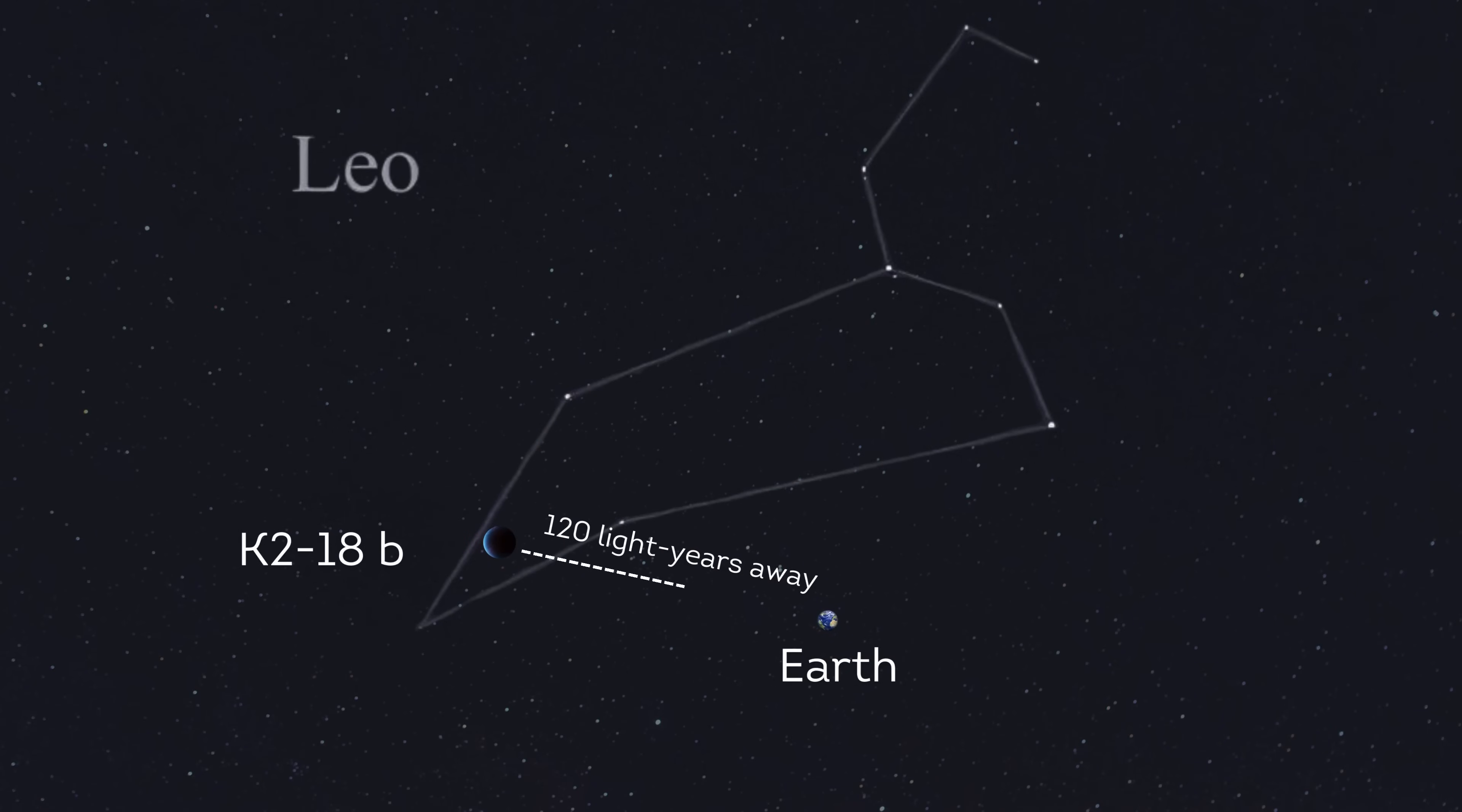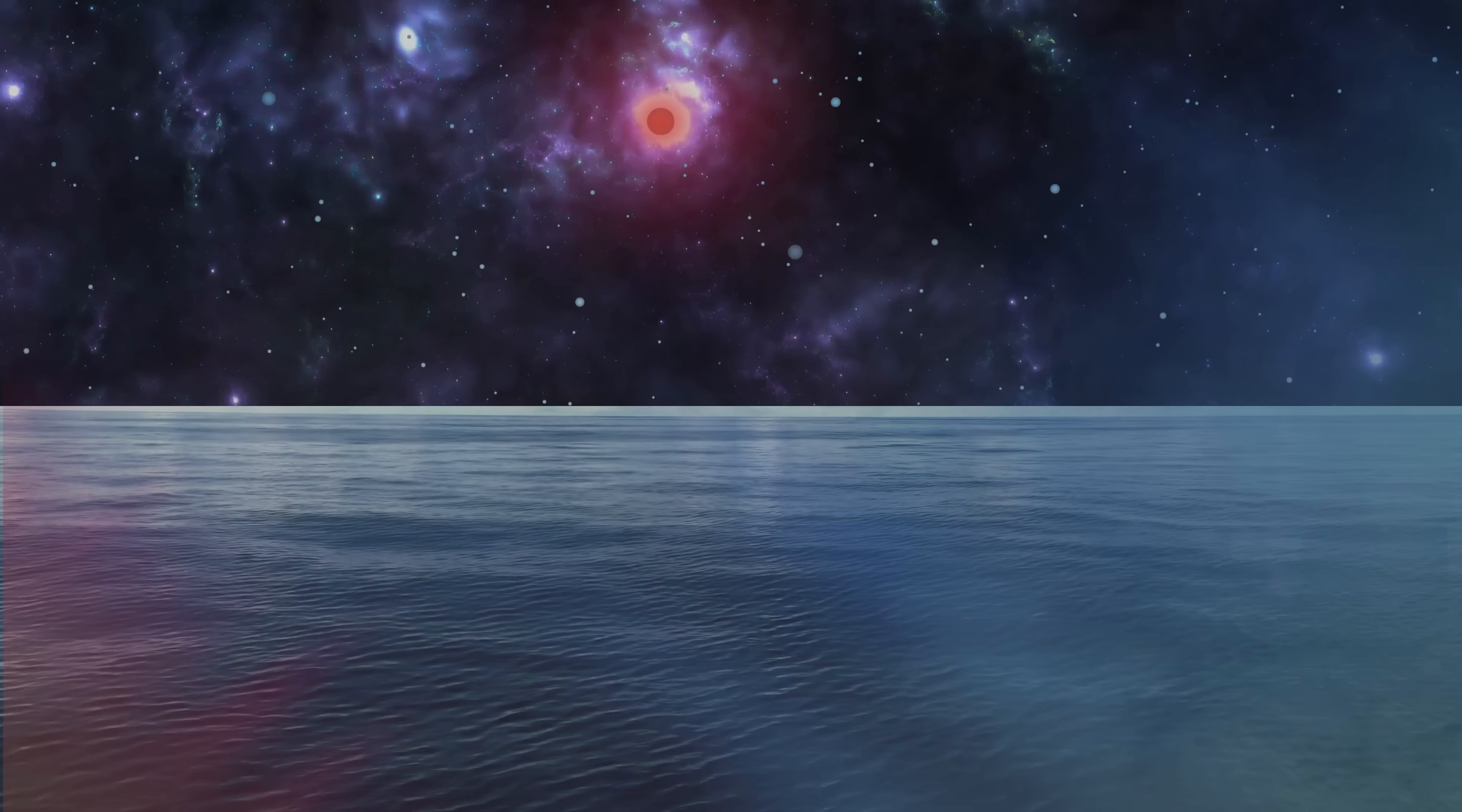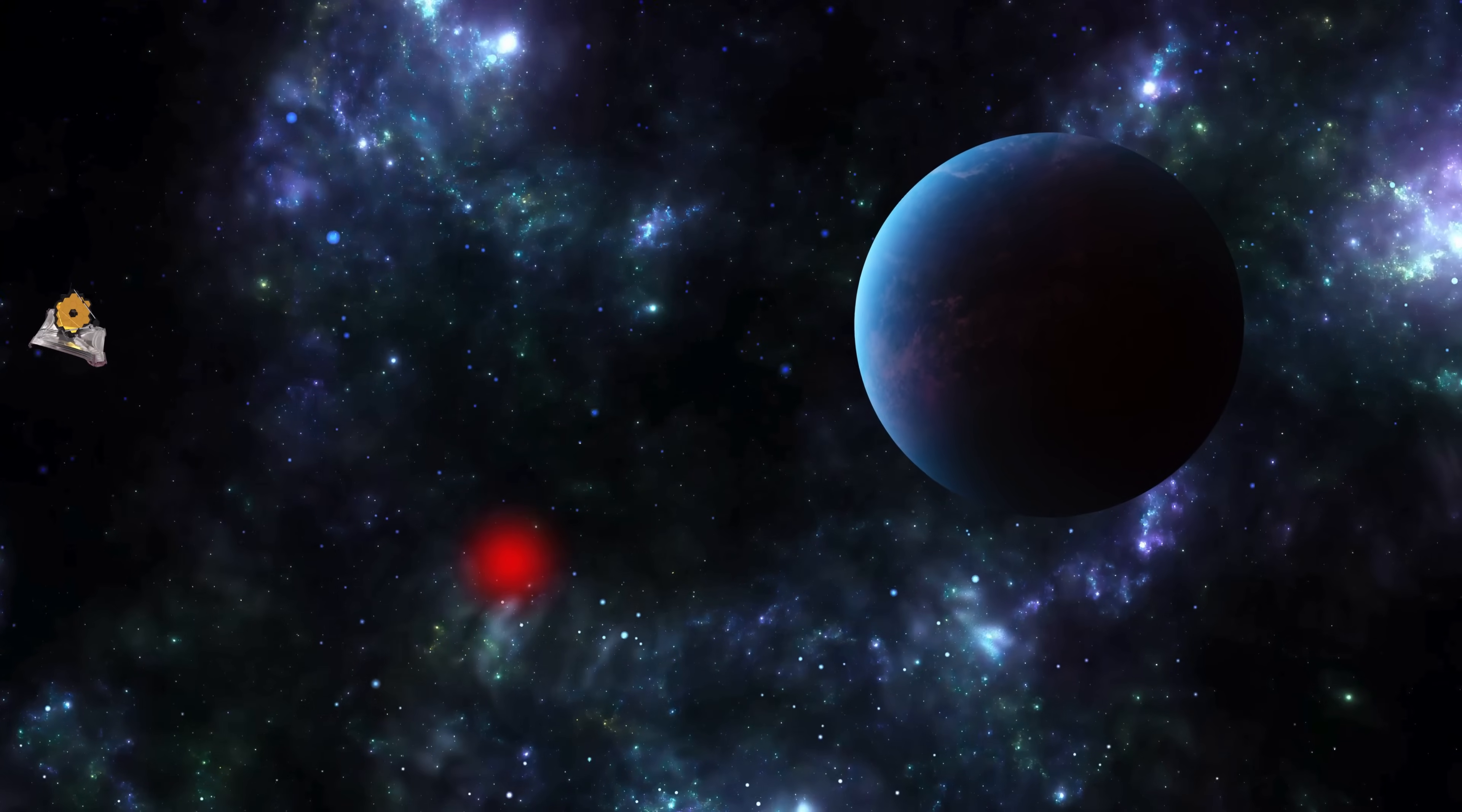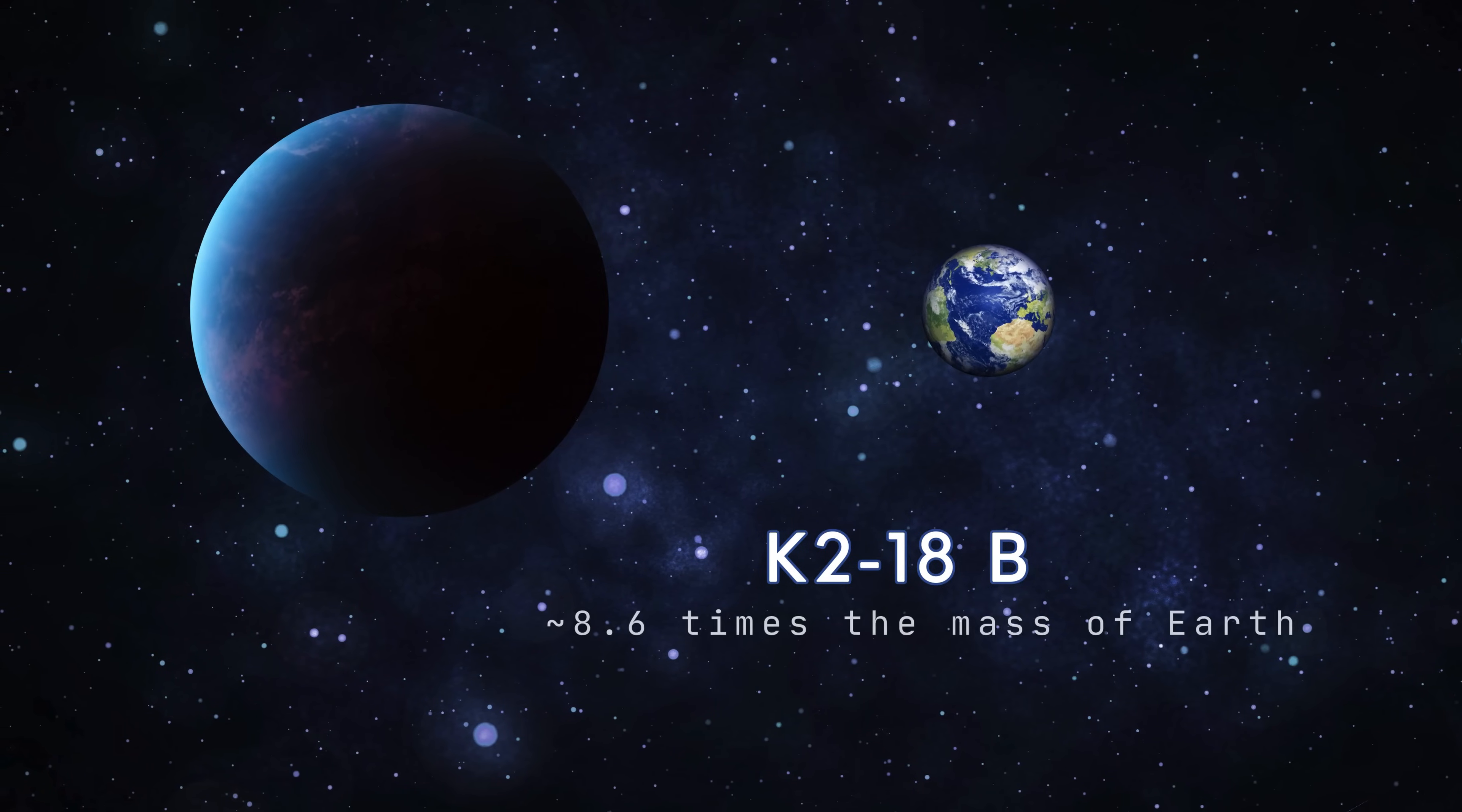K-218b, a sub-Neptune exoplanet 120 light-years away in the Leo constellation, orbits a dwarf star within its habitable zone. K-218b could have conditions that might allow liquid water to exist. Astronomers have been interested in this planet for a while because it could support life. K-218b is approximately two times the size and 8.6 times the mass of Earth.